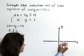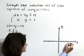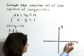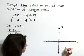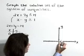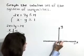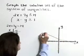We count out to 7 on the x-axis and graph that as a solid boundary line.